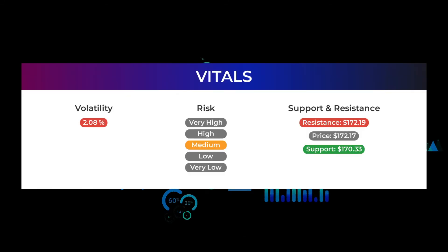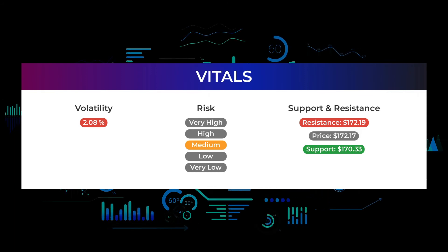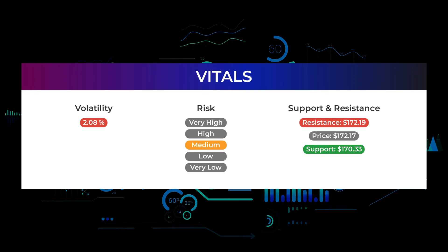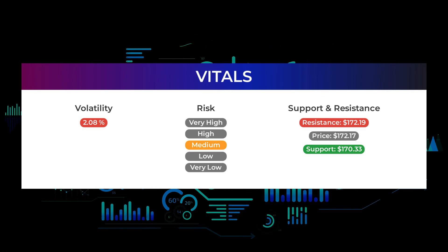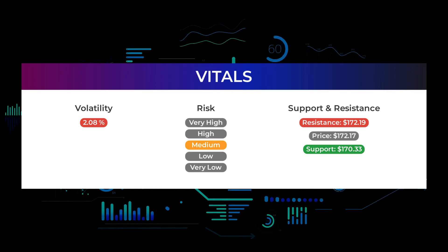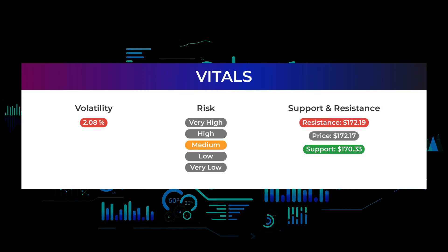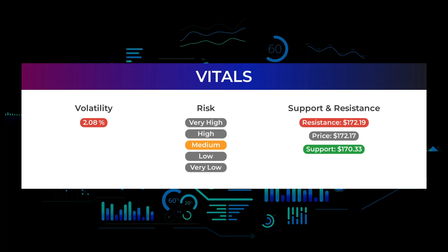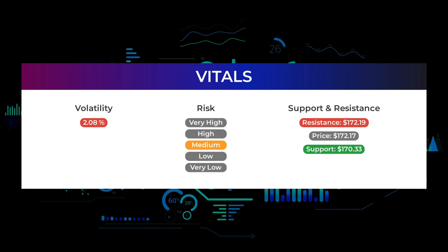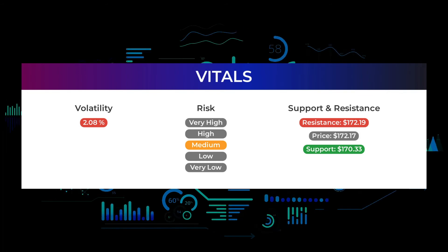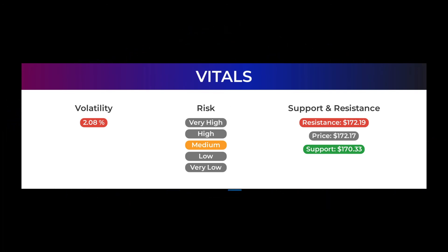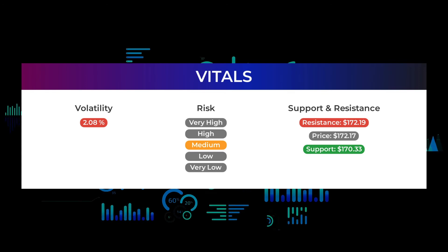Support, risk, and stop loss for Apple: Apple finds support from accumulated volume at $170.33, and this level may hold a buying opportunity as an upward reaction can be expected when the support is being tested. This stock has average movements during the day and with good trading volume, the risk is considered to be medium. During the last day, the stock moved $3.51 between high and low, or 2.07%. For the last week, the stock has had a daily average volatility of 2.08%.